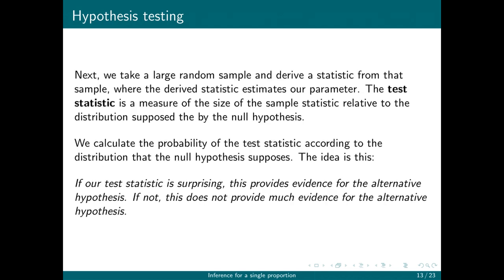Next, we take a large random sample and derive a statistic from that sample where the derived statistic estimates our parameter. For example, if we're trying to estimate the mean, we look at the sample mean; if we're trying to estimate the true proportion, we look at the sample proportion. The test statistic is a measure of the size of that sample relative to the distribution supposed by the null hypothesis — basically, the test statistic is going to be a z-score.